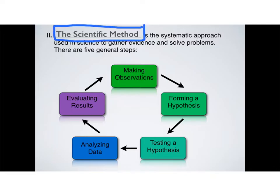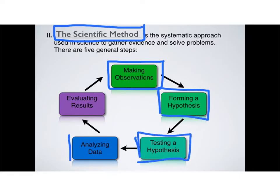We have to define what is exactly the scientific method. The scientific method is a systematic approach to gather evidence and solve problems. Depending on who you talk to, there could be many different numbers of steps in the scientific method, but we're going to say that there are five. Making observations, forming hypotheses, testing hypotheses, analyzing data, and evaluating results.